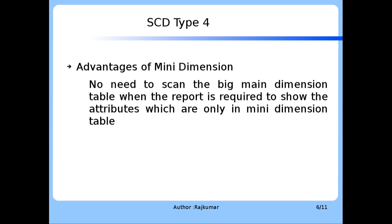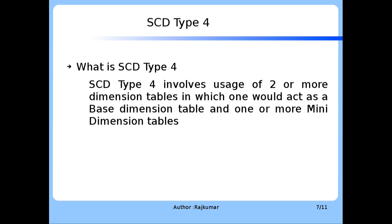Advantages of Mini Dimension: There is no need to scan the big dimension table when the report is required to show attributes which are only in the Mini Dimension table. What is SCD Type 4? SCD Type 4 involves usage of two or more dimension tables, in which one would act as a Base Dimension table and one or more Mini Dimension tables.